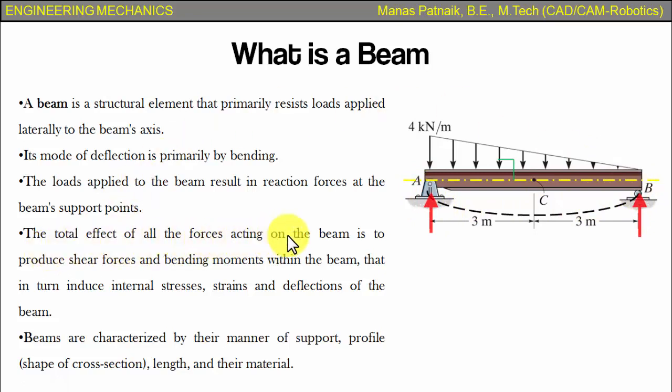Next point. The total effect of all the forces acting on the beam is to produce shear forces and bending moments within the beam that in turn induce internal stresses, strains, and deflections of the beam, obviously. Now because of all of this loading, because of these reactions, there are going to be shear forces set up across the length of the beam and also bending moments.